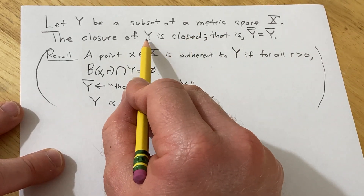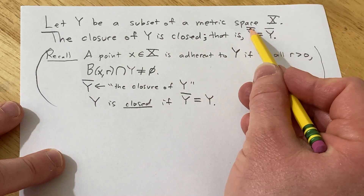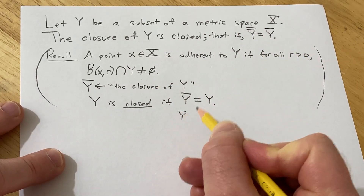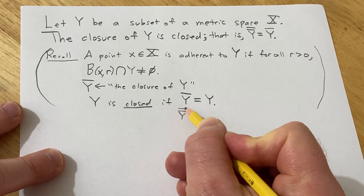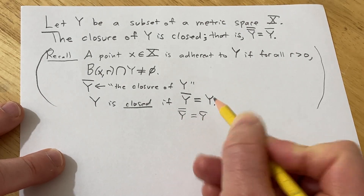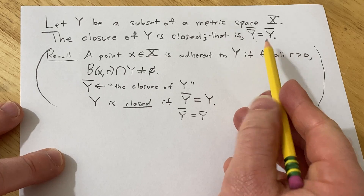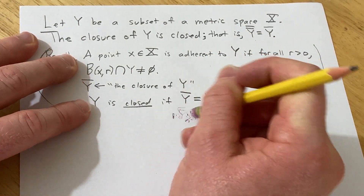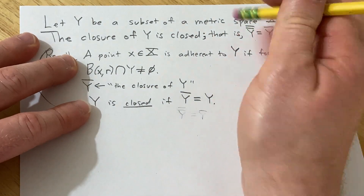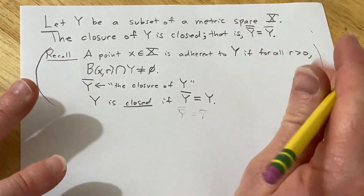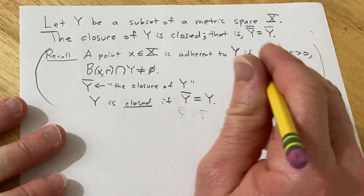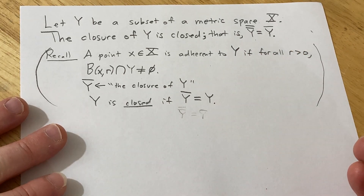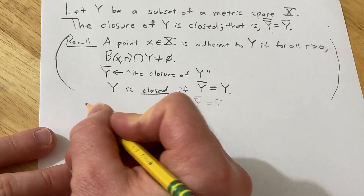To show the closure of Y is closed basically means that if you take the closure of Y, and you take the closure again, you get back the original set — which is exactly what you see here. Another fact that you should know, which requires a very easy proof so we won't prove it in this video: every set is contained in its closure. Okay, let's go ahead and go through the proof.